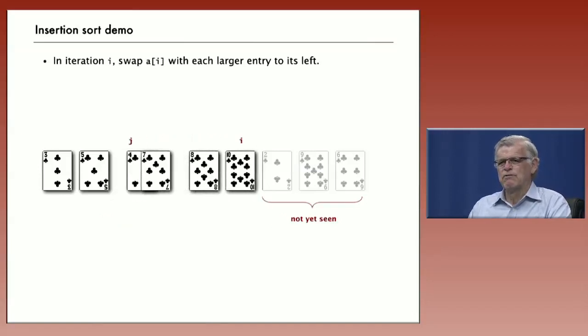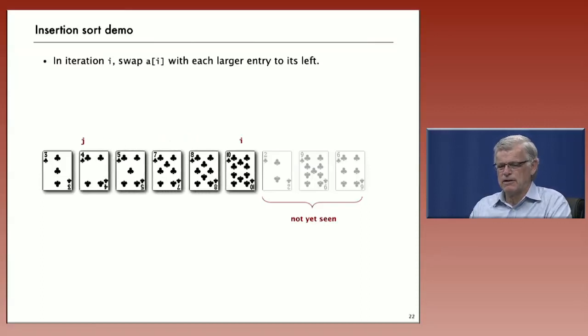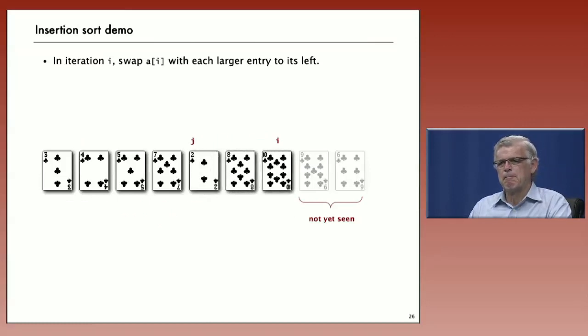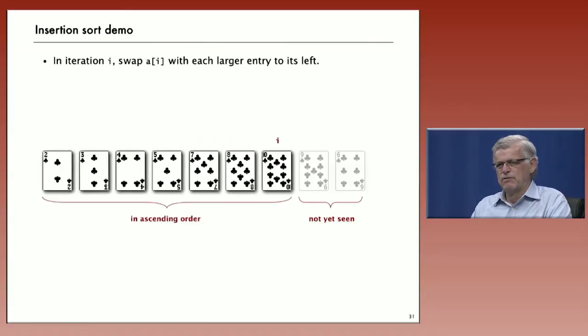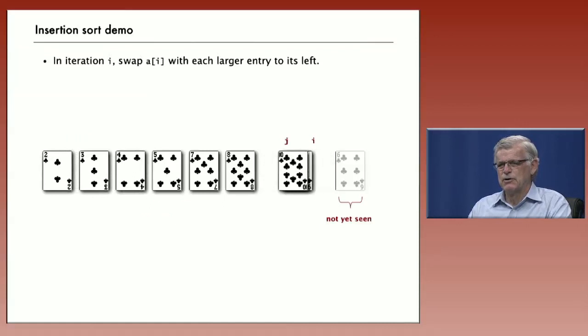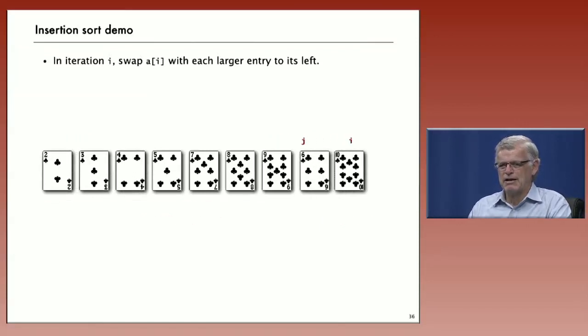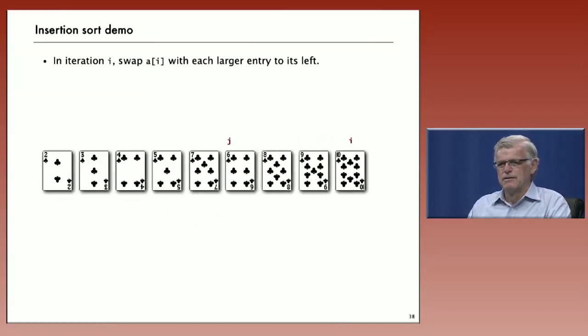4, exchange it with everybody to its left that's greater until we find a smaller element, and then it's in ascending order. 2 has to go all the way back to the beginning. But then the very next one, the 9, has to only go back one position. And the 6 has to go about halfway back, and then we have the entire array sorted.